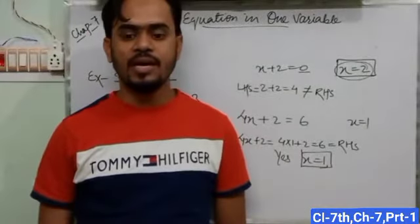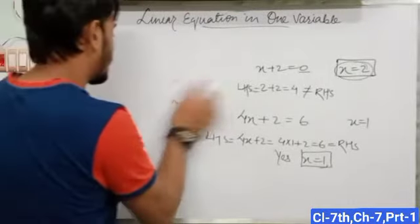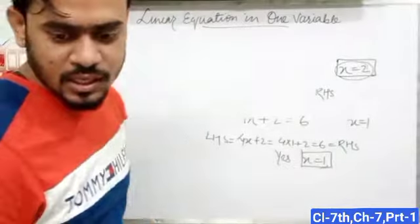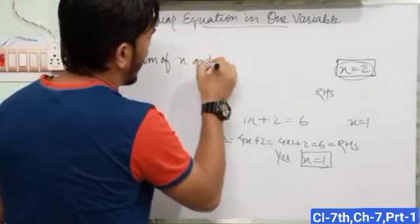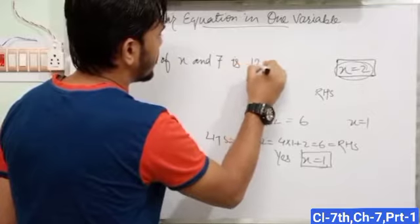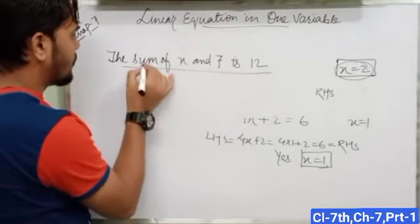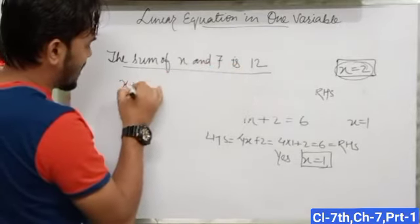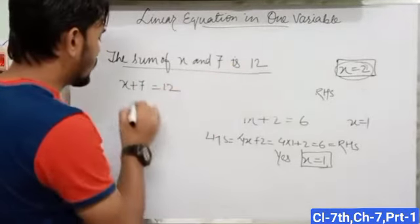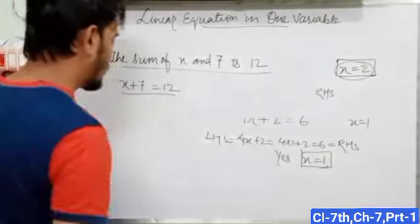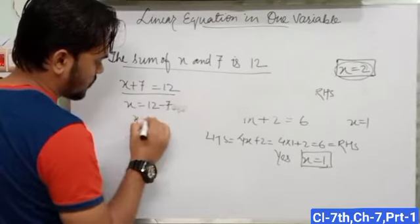Basically in this chapter, we have to learn to make an expression from statements. For example: the sum of x and 7 is 12. First, find the sum of x and 7, that means x + 7. The sum of x + 7 is 12, that means x + 7 = 12. This is your expression. Then find the value: x = 12 − 7 = 5.